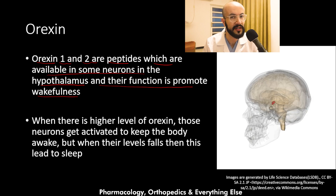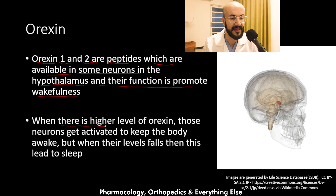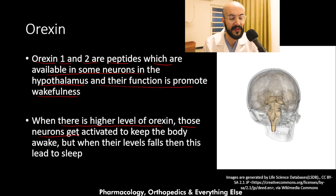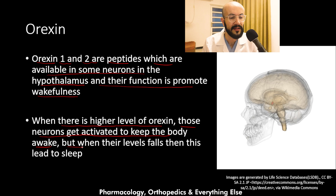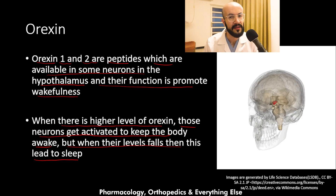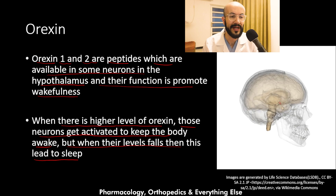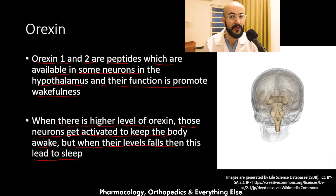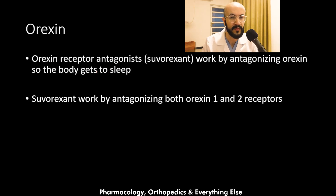How does orexin work to keep the body awake? When there are higher levels of orexin, those neurons in the hypothalamus get activated to keep the body awake. But when the levels fall, this leads to sleep. So during the day the orexin levels are higher, and during the night the orexin levels fall to make the body sleep.